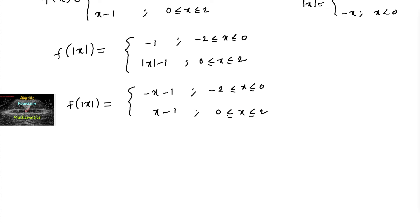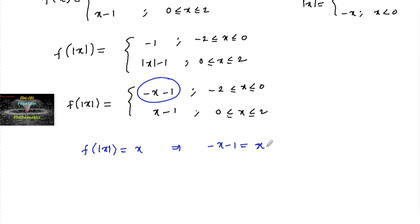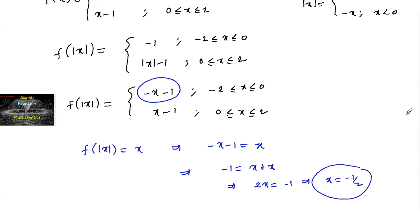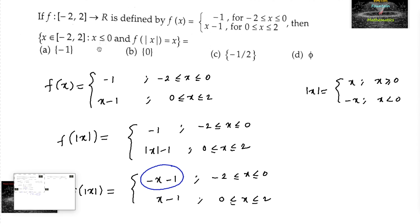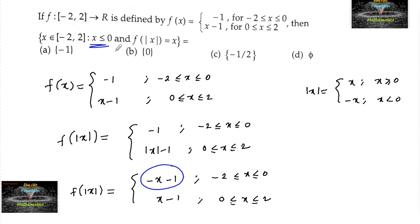Since we require x < 0, we consider -x - 1 and set f(|x|) = x. This gives -x - 1 = x, which implies -1 = x + x, so 2x = -1, therefore x = -1/2. Since x = -1/2 is less than 0 and lies in [-2, 2], f(|x|) = x is satisfied for x = -1/2.